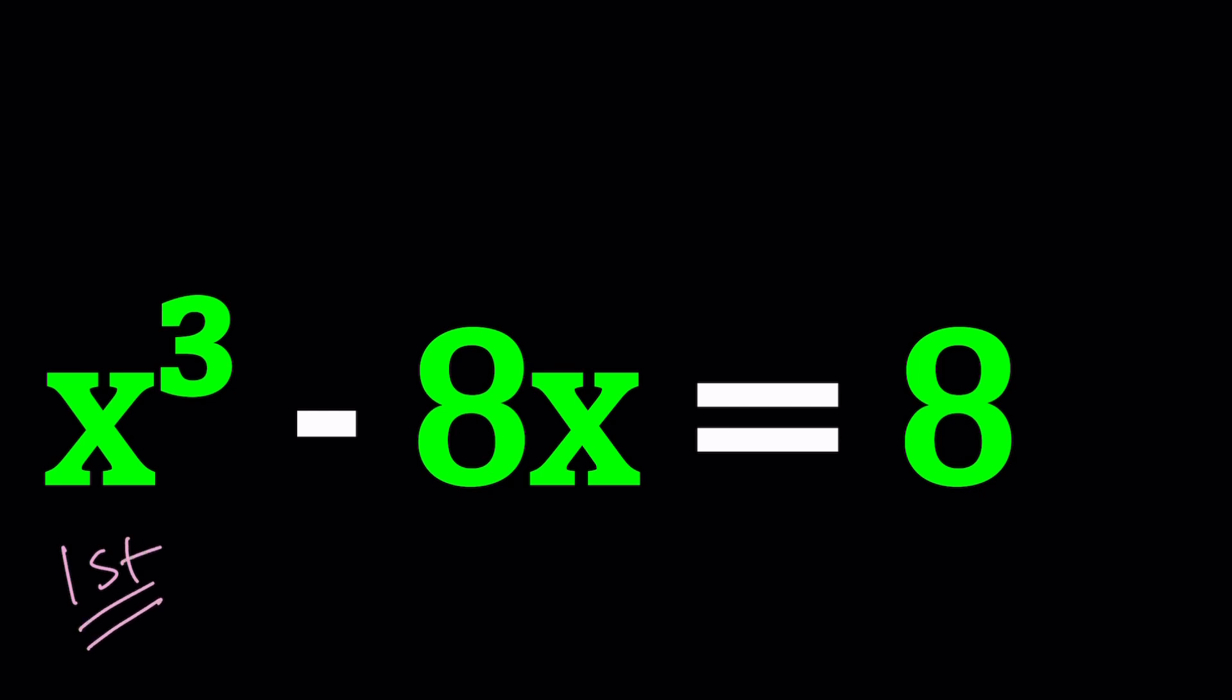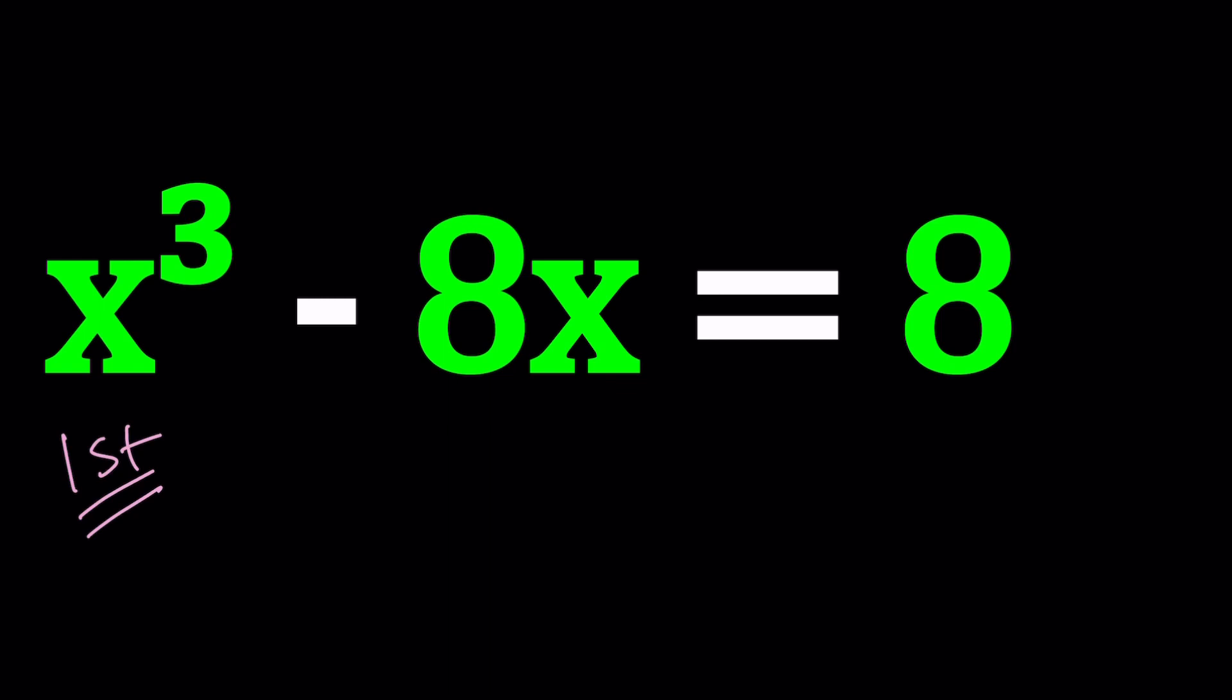For my first method I want to talk about the cubic formula which is something you should definitely know. Notice that if we cube a + b we get a³ + b³ + 3ab(a + b). We can factor part of that and then if we subtract from this the terms in the middle we get a³ + b³ which is the sum of two cubes. Now this equation is going to help us solve a cubic equation especially the ones that are depressed.